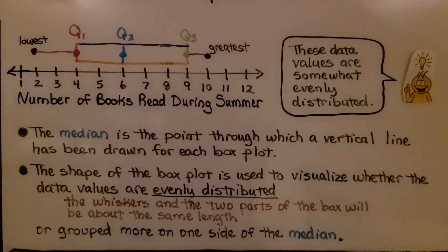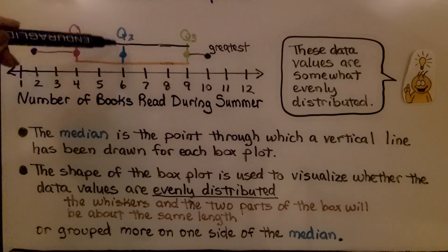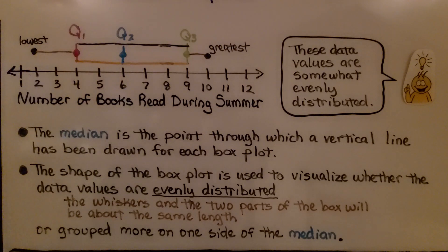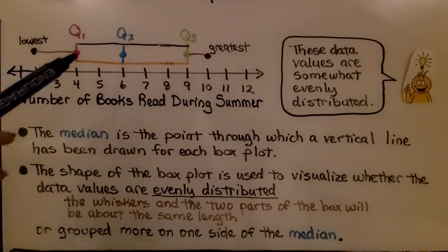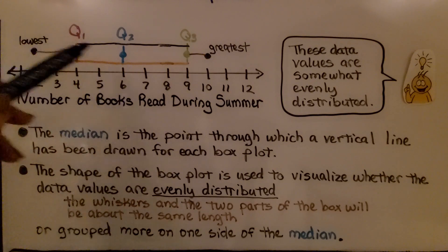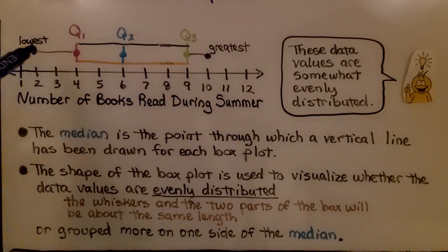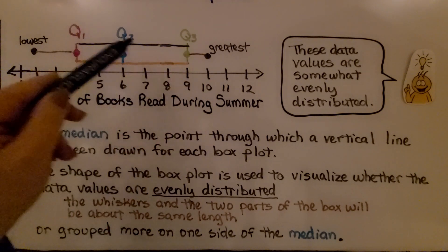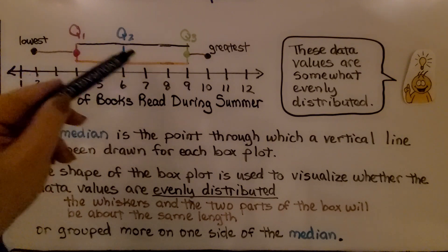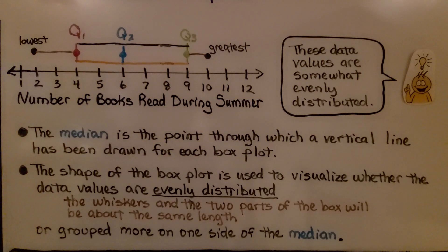And the median is the point through which a vertical line has been drawn for each box plot. And the shape of the box plot is used to visualize whether the data values are evenly distributed. The whiskers and the two parts of the box will be about the same length. So these whiskers are not that different from each other. This one's one unit long, this one is two units long. And each side of the box are about the same size, or grouped more to one side of the median.